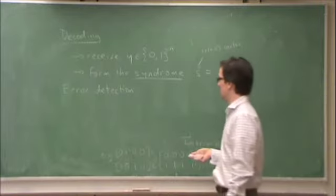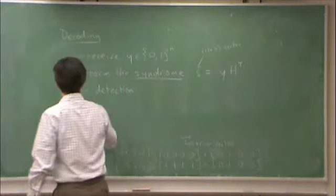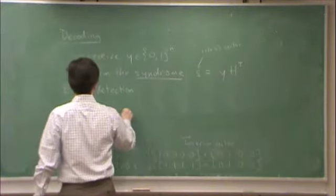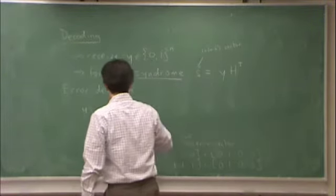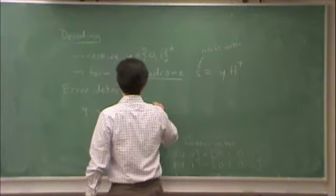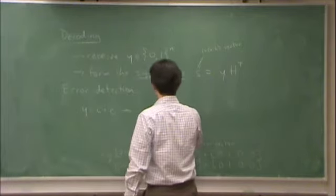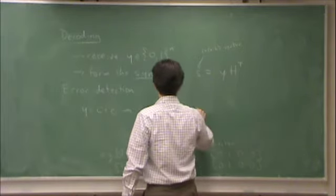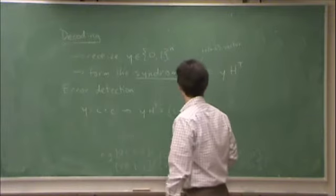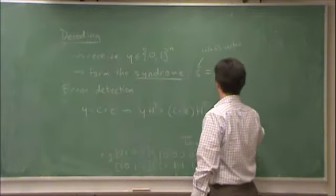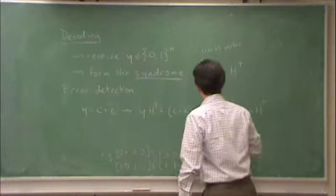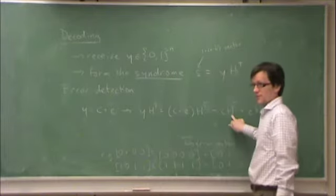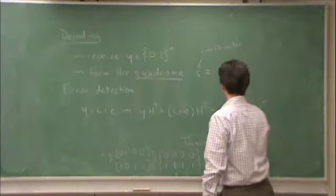Check if it's 0, exactly. So y is equal to c plus e. So yh transpose is equal to c plus e h transpose, which is equal to c h transpose plus e h transpose, which is equal to c h transpose for any valid code word is 0. So this is e h transpose.